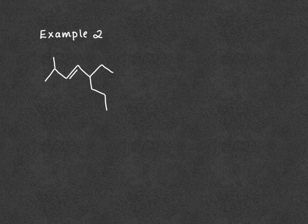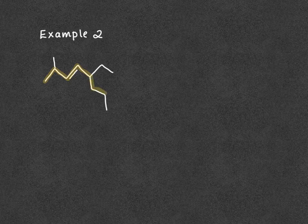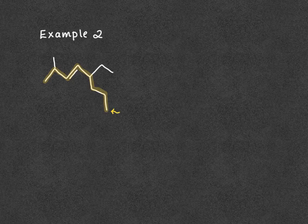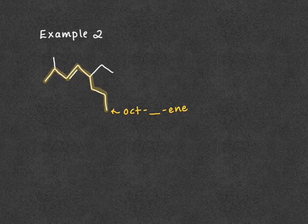We're going to walk through a second example, following the same steps. Step 1 is to identify our longest continuous chain, highlighted in yellow — that chain must contain our double bond. In this case the chain doesn't go straight across but instead takes one of the branches. Counting the carbons, we get 8 carbons, so our parent chain is going to be oct-something-ene.